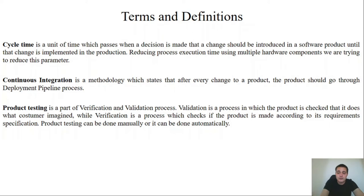Before we start with the system, we are giving some definitions of the terms we will be using. What is the Cycle Time? Cycle Time is a time which passes when we want a change to be made in our system to actually that change being implemented in our system in production. What is continuous integration? Continuous integration represents a methodology which states that after every change made to the system, the system should go through the Deployment Pipeline. What is product testing?